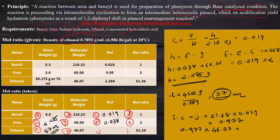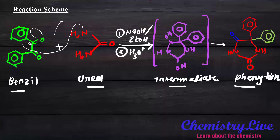Before starting the experiment, we need to learn about the reaction and its mechanism. Looking at the reaction, two carbonyl groups are present together. The inductive effect operates here; the lone pair of electrons migrates, and after addition of H₃O⁺, cyclization occurs. We get two OH groups as an intermediate, and after removal of the H group from OH, we get the carbonyl group and obtain our phenytoin moiety.